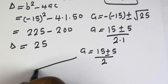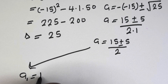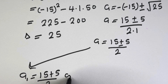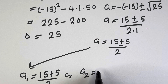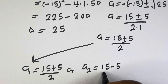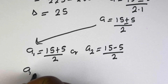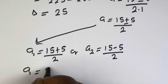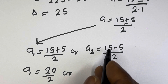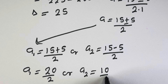Therefore, A1 equals 15 plus 5 over 2, and A2 equals 15 minus 5 over 2. A1 equals 20 over 2, which is 10. A2 equals 10 over 2, which is 5.